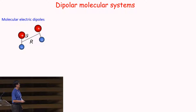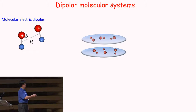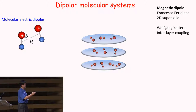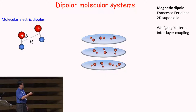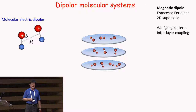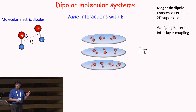Why do we study dipolar molecular systems? Because of the electrical dipole moment that we can control with electric field. Now, as I mentioned, we can actually make molecules one pancake at a time. We have heard great talks from Francesca — the first talk of the conference talking about 2D supersolid with magnetic dipoles — and we have heard more results coming from different groups. We're about to hear a super exciting talk from Wolfgang. He can hardly contain his energy — he was telling me he's going to jump up on the stage very soon to tell us about interlayer coupling between magnetic dipoles of chromium.